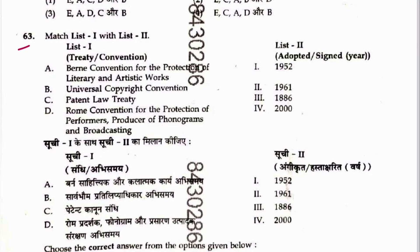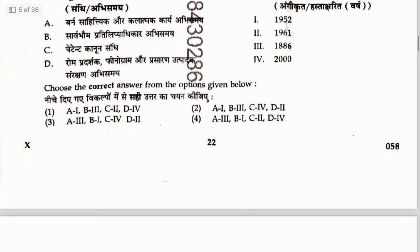Question 63: Match treaties to year of adoption. Berne Convention for the Protection of Literary and Artistic Works — adopted in 1886. Universal Copyright Convention — 1952. Patent Cooperation Treaty — 1970 (Rome Convention for Protection of Performances and Producers of Phonograms and Broadcasting — 1961). Sequence is 3, 1, 4, 2. Answer is 3. This question is from IPR.